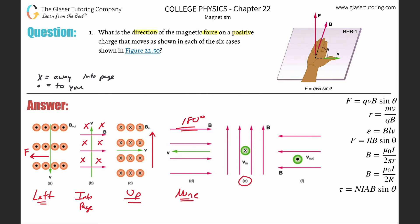Letter E: the velocity is pointing into the computer screen, so take your thumb and point it toward the screen. Now take your four fingers and point them upward, because that's the direction of the magnetic field. Your palm should now be pointing to the right, and that is the direction of the force — to the right.